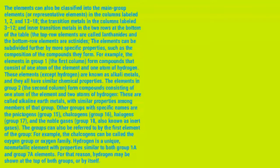The elements can also be classified into the main group elements, or representative elements, in columns labeled 1, 2, and 13–18; the transition metals in columns labeled 3–12; and the inner transition metals in the two rows at the bottom of the table — the top row being the lanthanides and the bottom row the actinides. Elements can be subdivided further by more specific properties. For example, the elements in group 1 (the first column) form compounds consisting of one atom of the element and one atom of hydrogen. These elements, except hydrogen, are known as alkali metals and all have similar chemical properties.